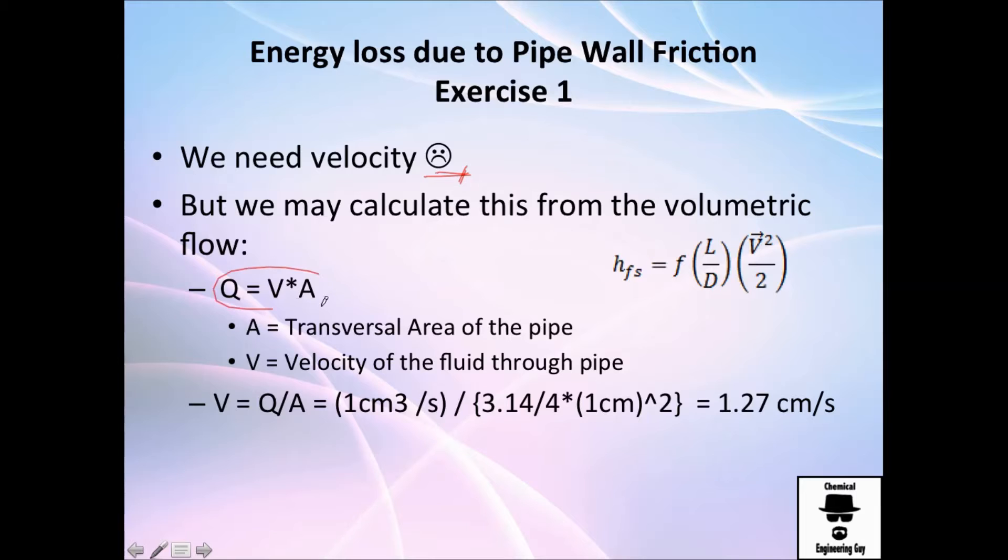Recall that volumetric flow rate is actually velocity times the area. What's the area right here is essentially pi divided by 4 times the diameter to the second power. So what's the diameter? It was one centimeter, so it's right here, one centimeter to the second power. Pi is about 3.14 divided by 4. And we need our volumetric flow rate, which is one cubic centimeter per second.